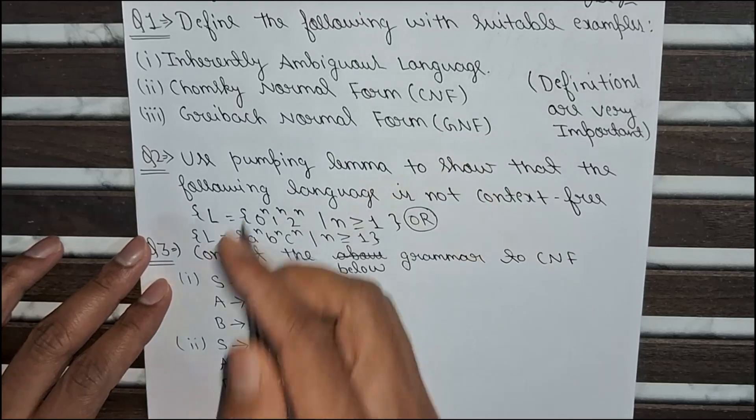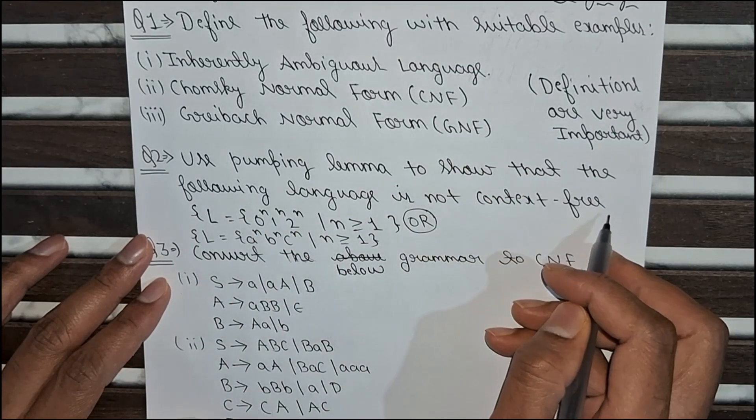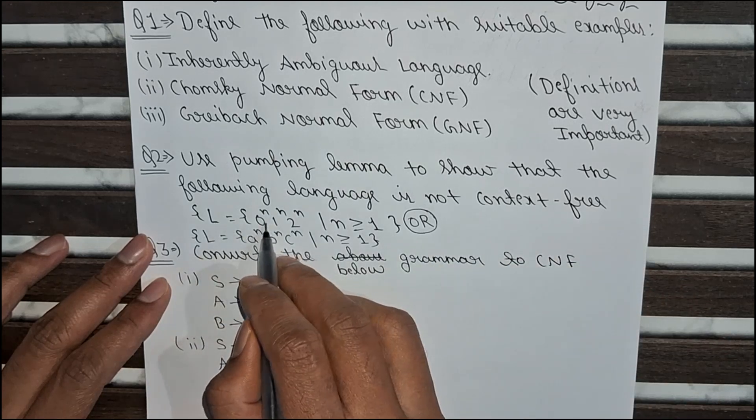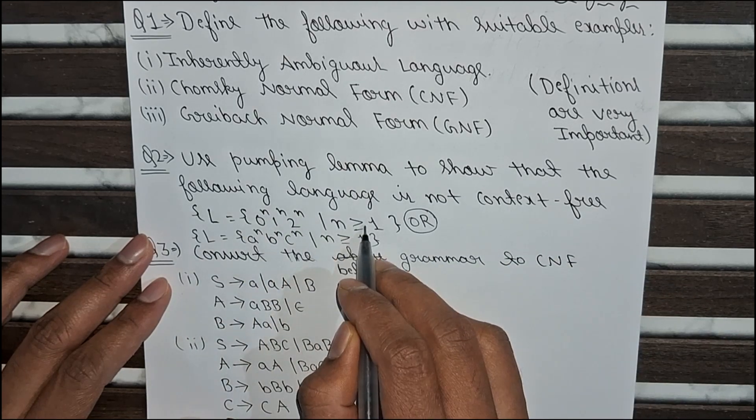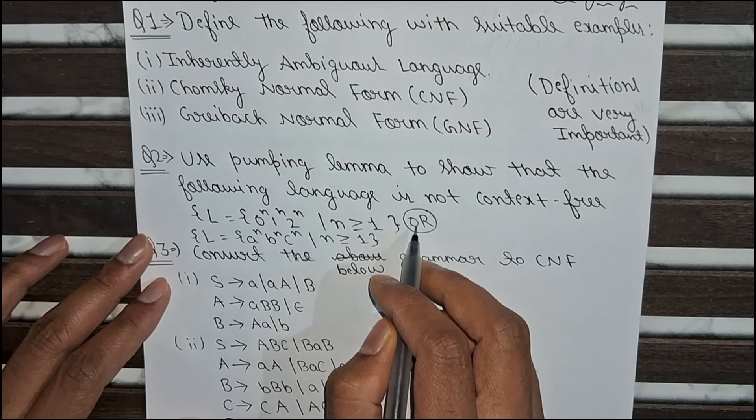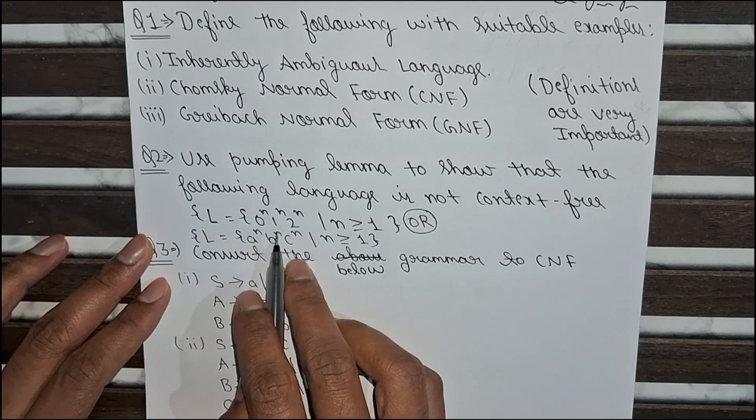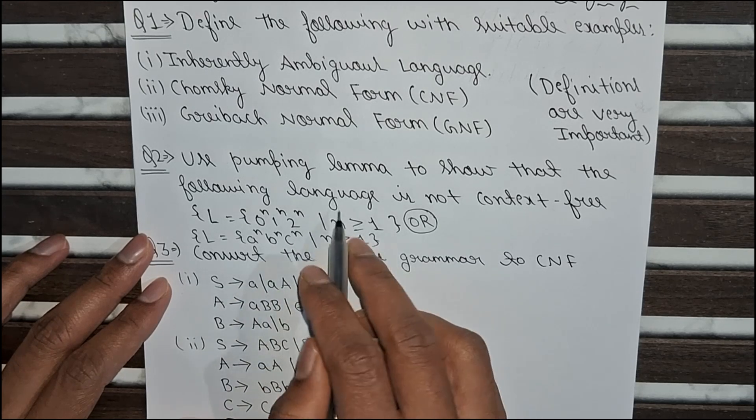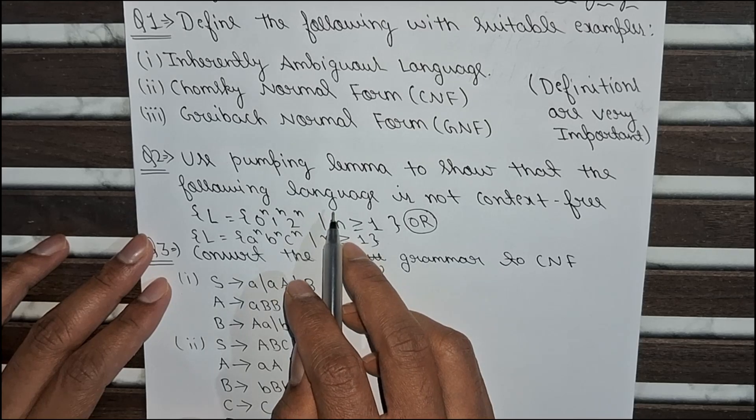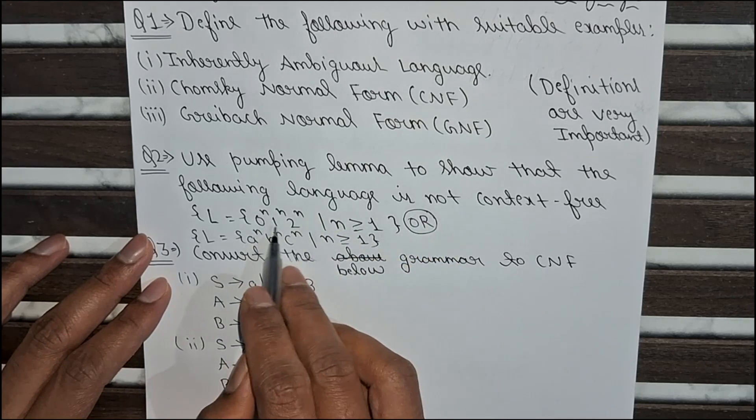Now the second question is, use pumping lemma to show that the following language is not context free. First language is 0 to the power n, 1 to the power n and 2 to the power n where n is greater than or equal to 1, or else the language can be written in the form of a to the power n, b to the power n, c to the power n where n is greater than or equal to 1. In both the languages, the same technique will be used. Only the input alphabets are changed.